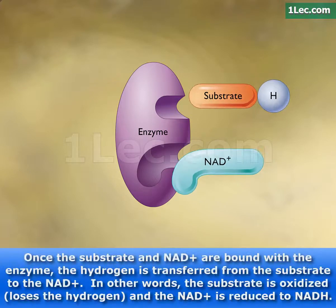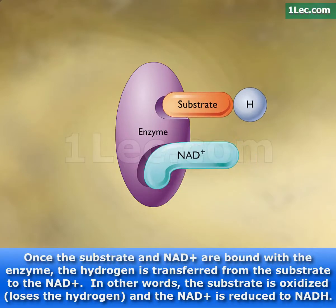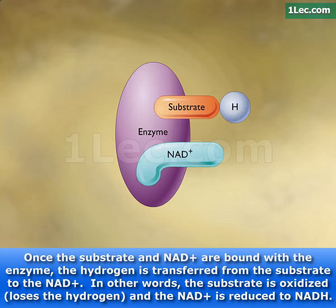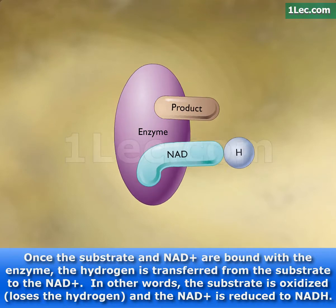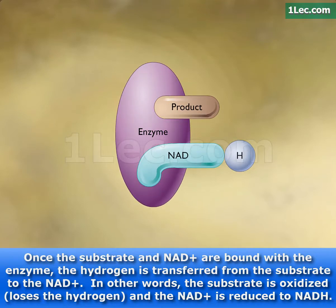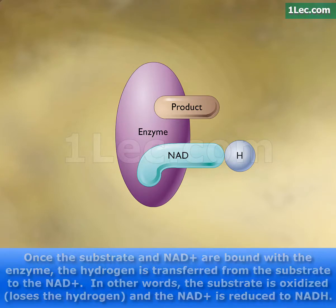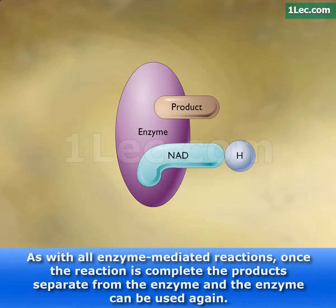Once the substrate and NAD+ are bound with the enzyme, the hydrogen is transferred from the substrate to the NAD+. In other words, the substrate is oxidized, loses the hydrogen, and the NAD+ is reduced to NADH.